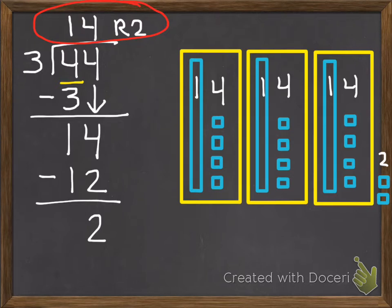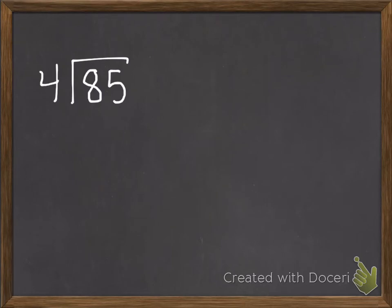So you can still use those models to help you, but now I'm going to do one without models. But it's going to be the same process. 85 divided by 4. So I start with my tens. If I have 8 tens and I'm dividing them between 4 groups.